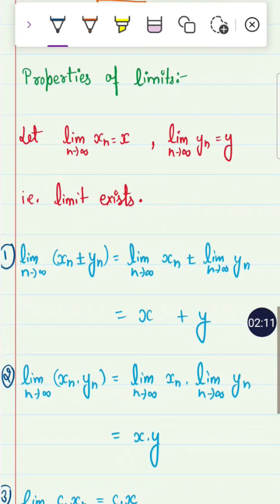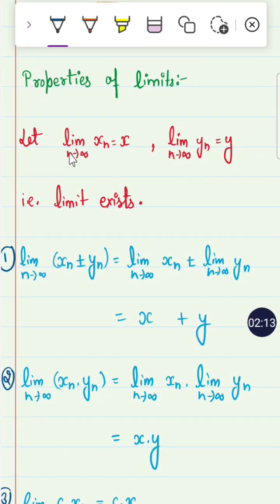Now, what are the properties of limits? If there exists a sequence Xn which converges to X and Yn converges to Y, then that means the limit exists.